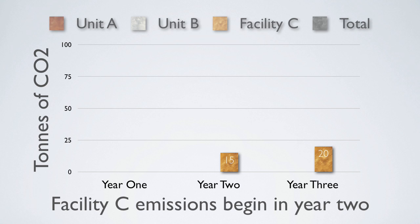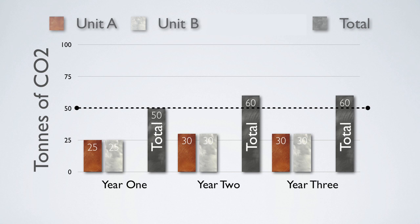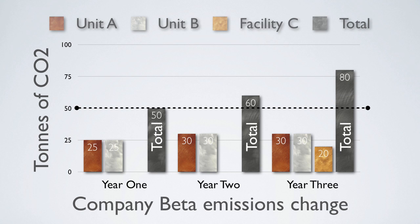The total emissions of Company Beta in year three are therefore 80 tons, as in the previous example. But in the case of this acquisition, the base year emissions of Company Beta do not change, because the acquired facility C did not exist in year one, when Company Beta set its base year. The base year emissions of Beta therefore remain at 50 tons, and the company may choose to recalculate its emissions for year two as 75 tons.